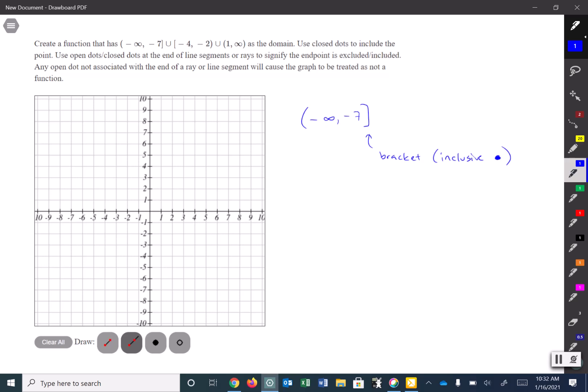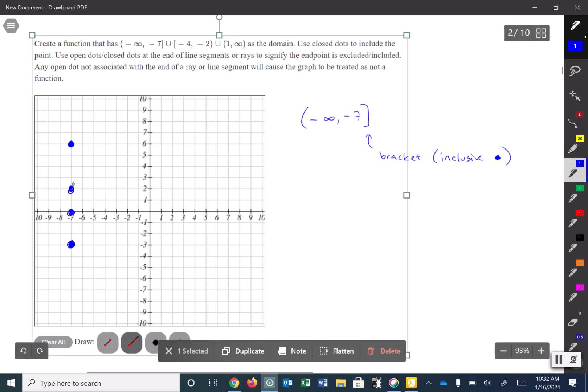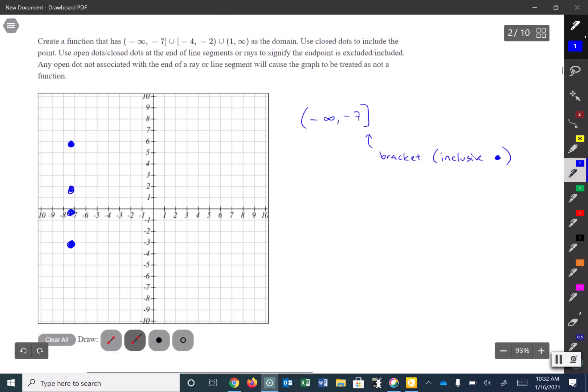I need to make a function such that it has a domain of negative 7 that's included. What that means is I can put any point that I want anywhere where x is negative 7. So I can put one here, here, here, on the x-axis itself. It doesn't really matter, as long as I have some point somewhere that is at negative 7. That's all that matters. So I'm going to use this point right here.